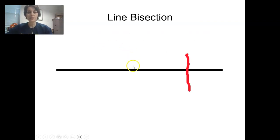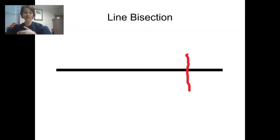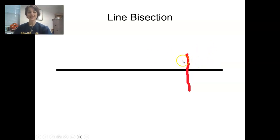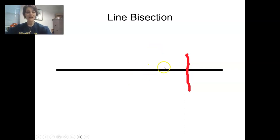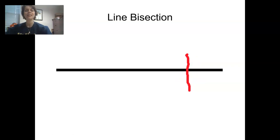For example, if we're doing line bisection — a very easy task where we give patients a horizontal line and tell them to draw a vertical line that cuts it perfectly in half — they do it in such a way that it's only a quarter of the visual space. That's because they're not paying attention to the left half of the line. To them, only the right portion exists, and they bisect what they believe the line is.